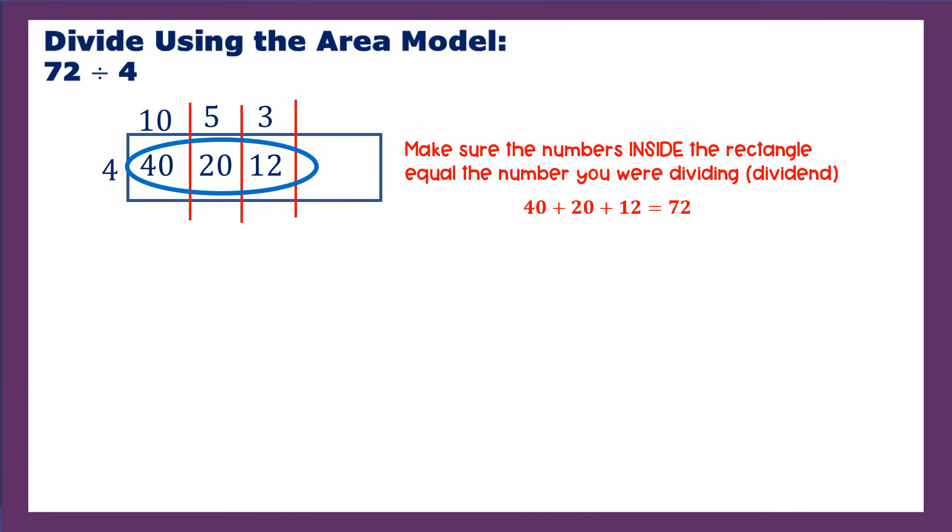Now, how do we get our answer? We still don't know the answer. And remember, the answer to a division problem is called a quotient. So what's our quotient? Well, the answer or the quotient is the sum of all of these, we'll call them partial quotients up here. So we divided into part of 72 and got 10. We divided into another part of 72 and got 5. We divided into another part of 72 and got 3. Therefore, my answer is the sum of all of those numbers. 72 divided by 4 is 10 plus 5 plus 3 or 18.